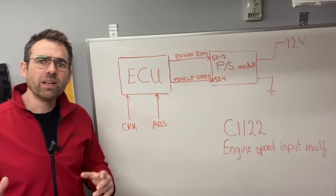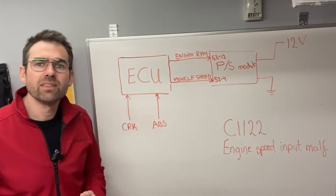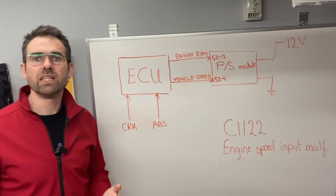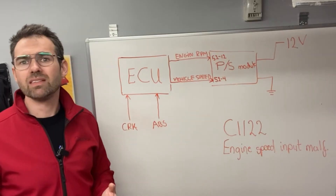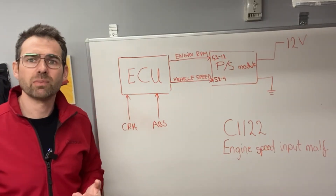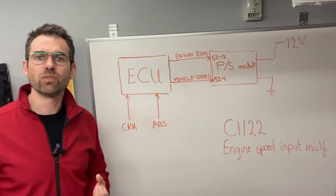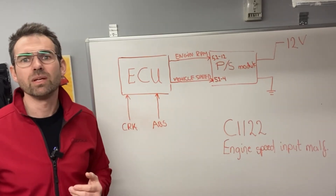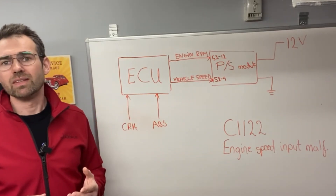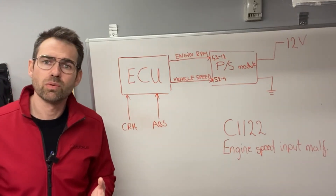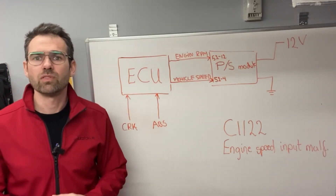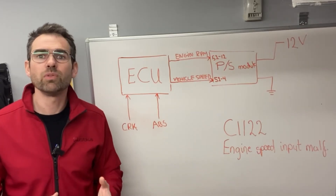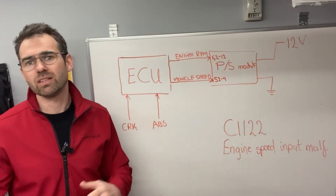So why does this actually need the engine RPM and the vehicle speed? Well, that's of course because it is an electric power steering we're dealing with here. It needs to know how fast you're driving and how much assistance it needs to give, but it also needs that information in order to return back to center. So those two inputs are very important. If you don't have it, it doesn't really work.